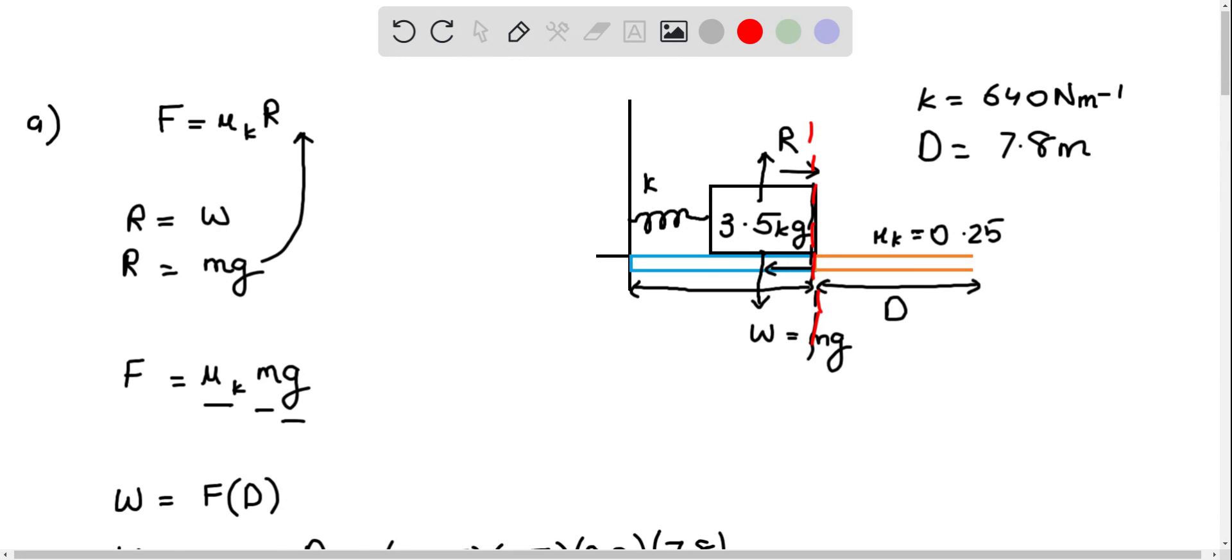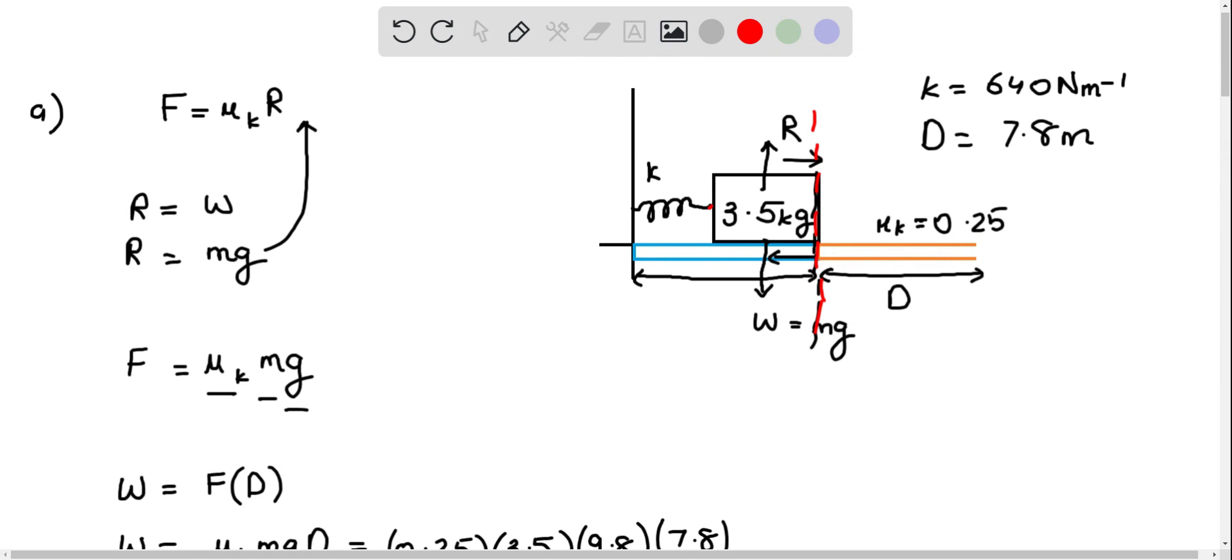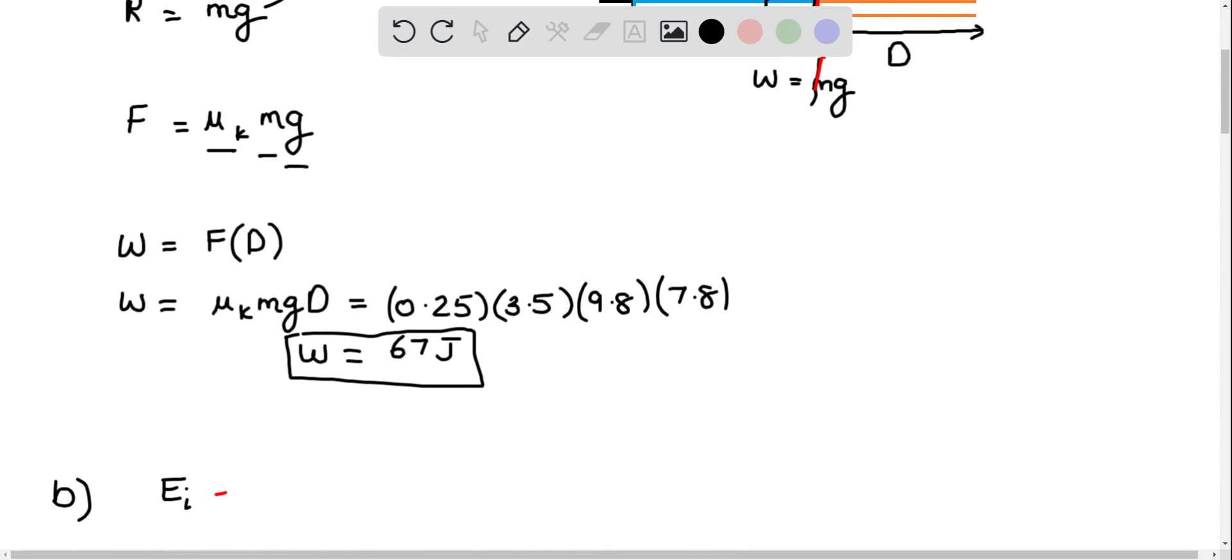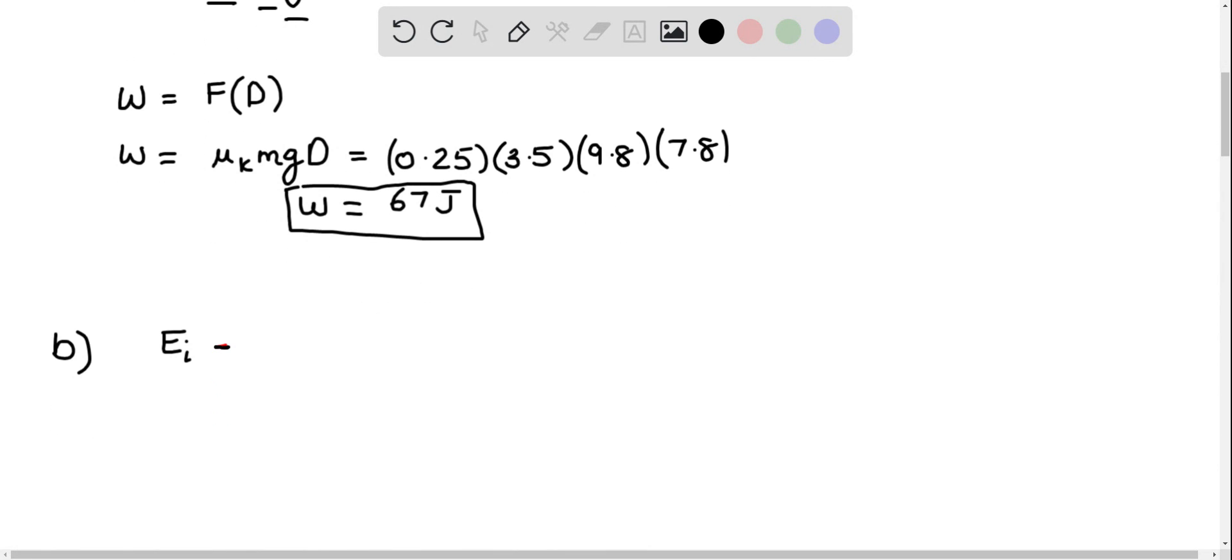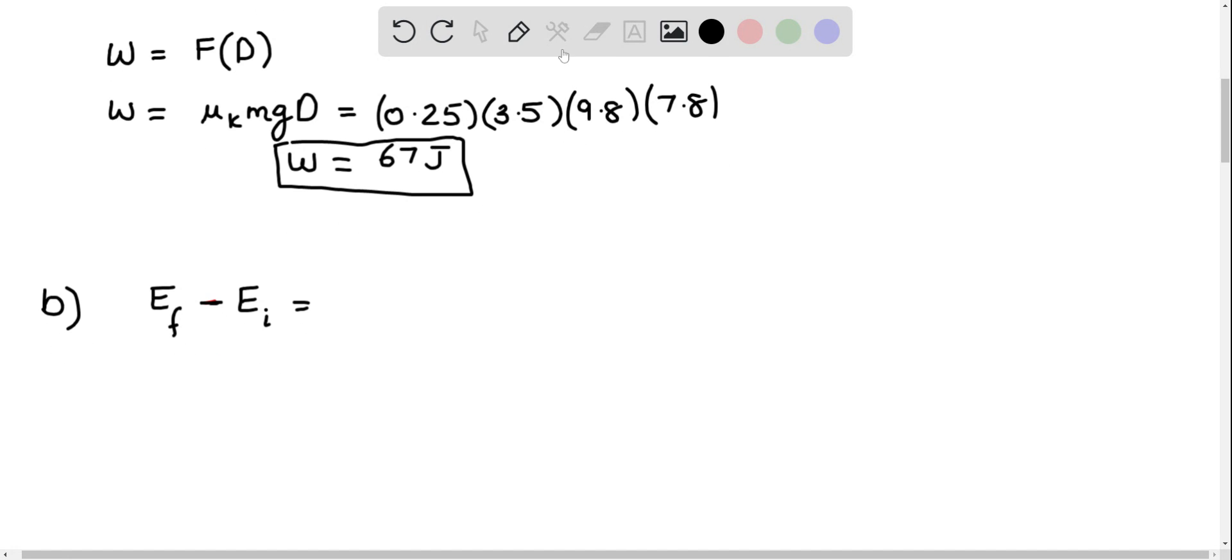Now, also note that it's not quite attached to the spring, so it's going to leave the spring immediately as it goes ahead. So there is going to be no potential energy of the spring. So the final energy, E sub f, minus the initial energy equals negative 67, because 67 joules of energy leave the system as thermal energy as we calculated in the previous part.